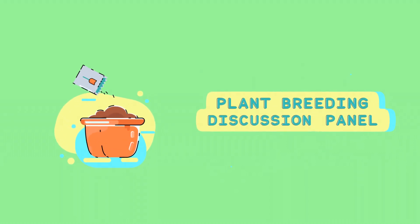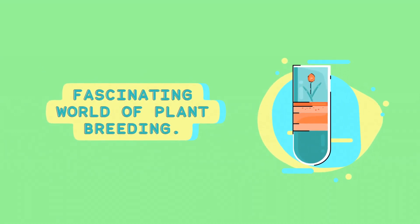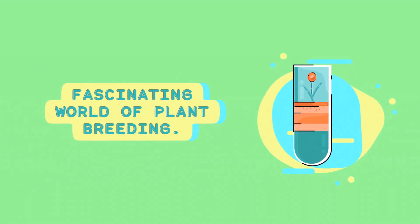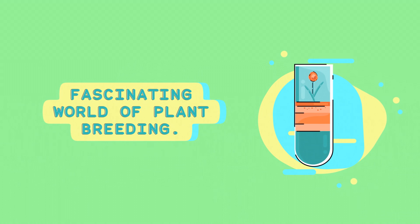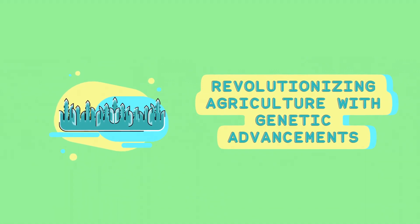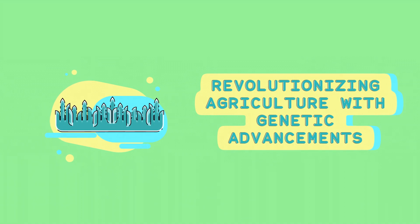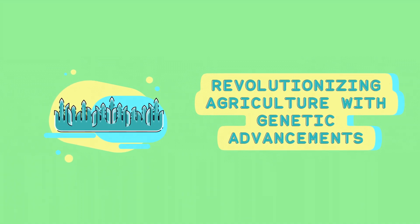Cultivating the Future: a discussion of plant breeding. Plant breeding is the fascinating science of manipulating plant traits to create new varieties with desirable characteristics. It's an ancient practice dating back to the very beginnings of agriculture, but modern advancements in genetics and biotechnology have revolutionized the field.